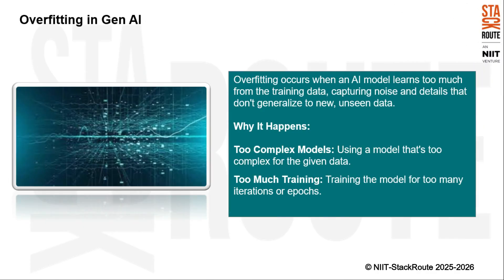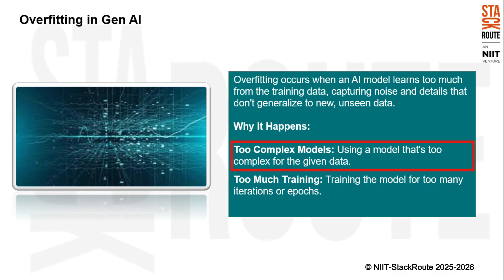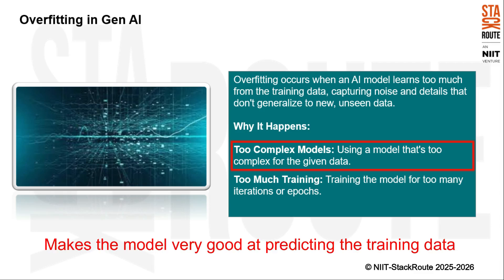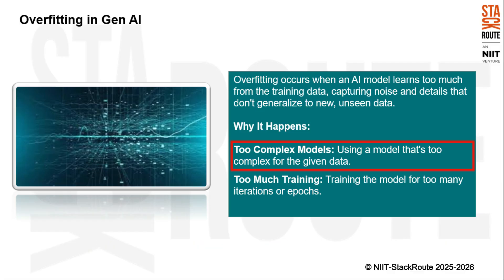We're going to talk about a common challenge in AI modeling called overfitting. Overfitting occurs when an AI model learns too much from the training data, capturing noise and details that don't generalize to new, unseen data — the model becomes too tailored to the specific data it was trained on and performs poorly on new data. One cause is too-complex models: models with too many parameters can capture even the smallest details of the training data, including noise, making them good at predicting training data but poor at generalizing.